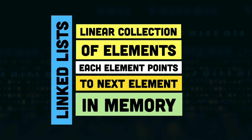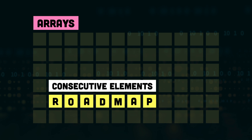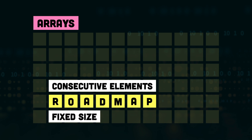Before we talk about linked lists, in our last video we talked about arrays. Arrays used to have a few limitations. Number one, the items are consecutively placed in memory. Number two, they are fixed in size — so if you defined an array of seven elements, you can't add the eighth element to the same array. Number three, the elements of an array must have the same type, so you can't add a string, character, or boolean value into the same array.